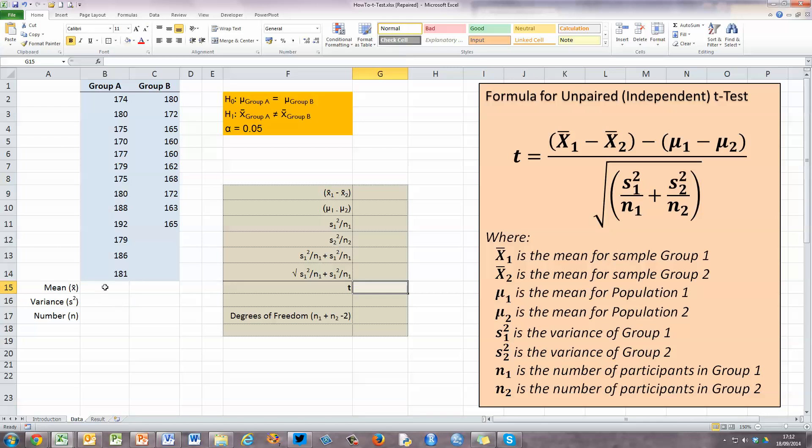So I can see in my formula that I need to calculate the mean, the variance, and the number of each sample. So let's do that first. So in cell B15 here, I want to calculate the mean or the average for group A. So I'm going to use Excel's AVERAGE function for that. So I'm going to just say equals AVERAGE, opening bracket, and with my mouse, select all the values in column B under group A, closing bracket and press enter.